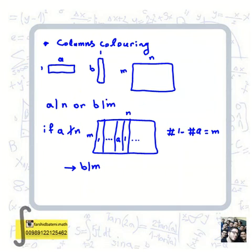And if a doesn't divide n, we can use column coloring and color the columns with a colors: 1, 2, up to a, and again 1, 2, up to a. Since a doesn't divide n, we know that the number of color 1 minus the number of color a equals one column.